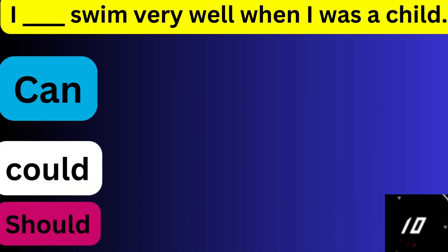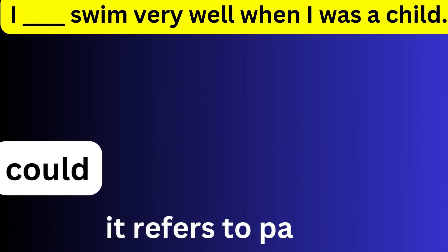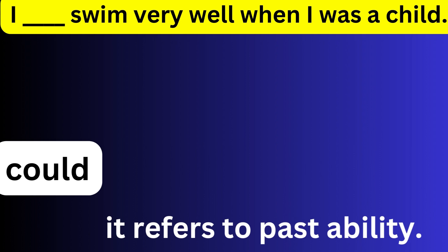I ___ swim very well when I was a child. I could swim very well when I was a child. جب میں بچہ تھا تو میں اچھی طرح سے تیراکی کر سکتا تھا۔ یہاں پے ہم نے could استعمال کیا ہے کیونکہ یہ ability کو show کر رہا ہے۔ Can بھی ability کو show کرتا ہے مگر present tense میں۔ یہاں ماضی ہے — was لگا ہوا ہے — اس لیے could لگایا۔